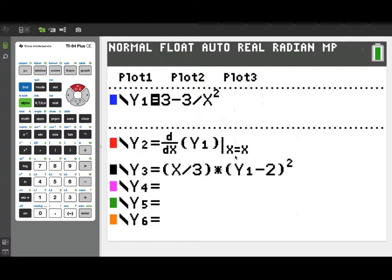Now notice what I've got entered for y2 and y3. It's exactly the two sides of our original differential equation. The left hand side was the derivative of y with respect to x. The right hand side was x over 3 times the quantity y minus 2 squared.